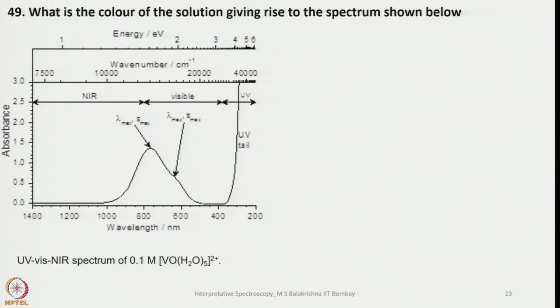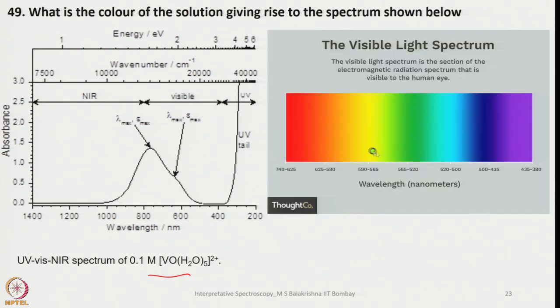What is the color of the solution giving rise to the spectrum shown below? This spectrum is for the pentaaqua vanadate compound. Vanadium is in +4 state, a D2 system. If we focus on the absorption between 500 to 1000 nanometers, this comes in the red region as well as partly green region. It is absorbing from this portion to this portion. As a result, what happens is it appears blue here. The color of the solution will be blue.